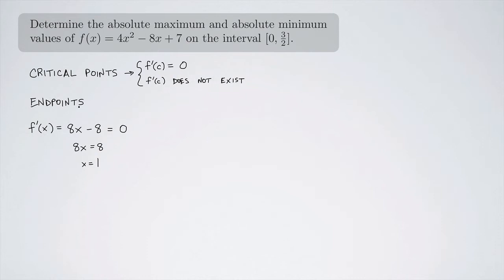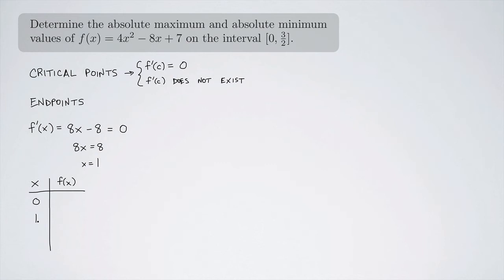We also want to check the endpoints, which are 0 and 3/2. So we'll look at x = 0 (first endpoint), x = 1 (critical point), and x = 3/2 (second endpoint). The critical point x = 1 is in the interval [0, 3/2], so we include it. If it weren't in the interval, we wouldn't need to check it.